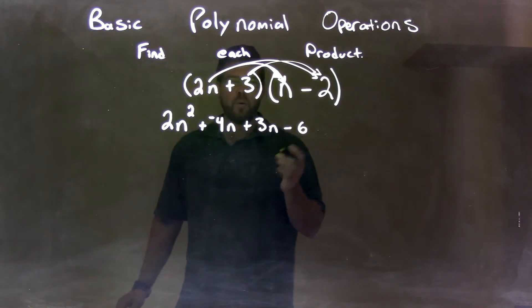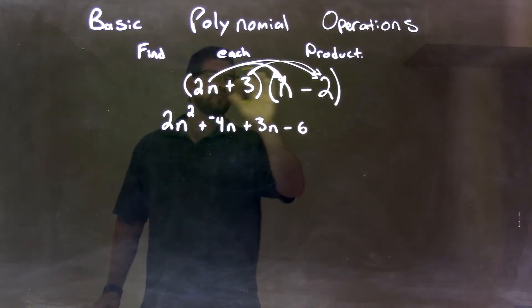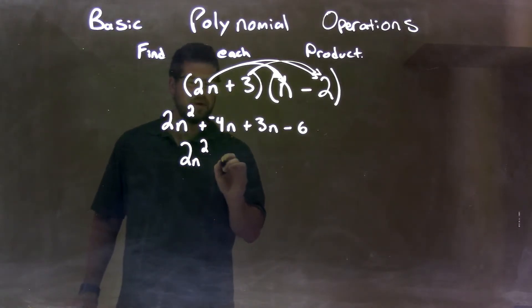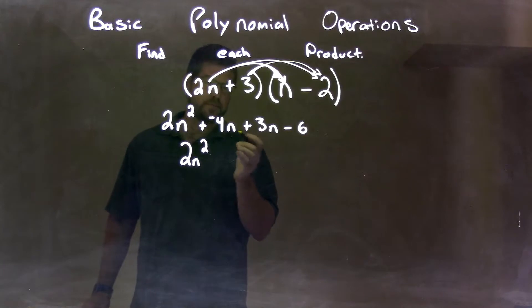So now we've done our distributing right here. Now we need to simplify what's left. The only two like terms here are the minus 4n and the 3n. So we bring down the 2n squared. Then we add here, negative 4n plus 3n is a minus 1n.